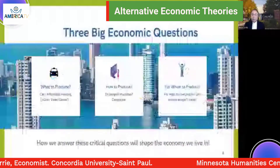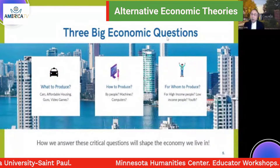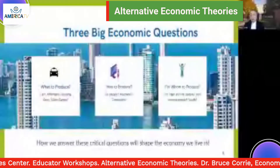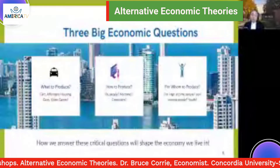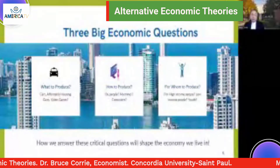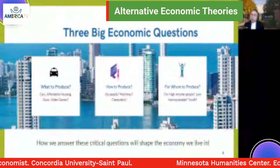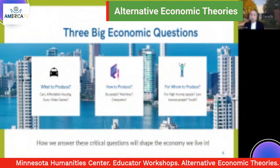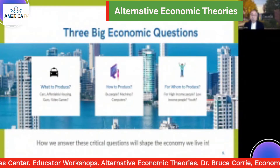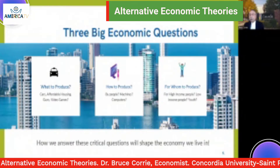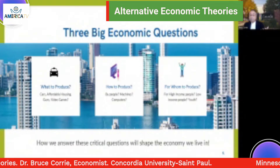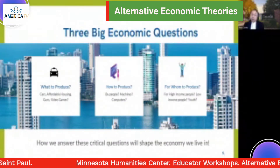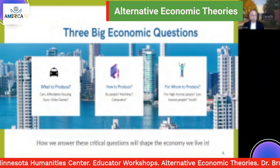So there are the three big questions in the world of economics. These three big questions are: what do we produce? Do we produce cars — what kind of cars? Luxury cars, ordinary cars, or electrical vehicles? How do we produce it — using people, or machines, or some combination of both? How do we produce these commodities, goods and services in the economy? And finally, for whom do we produce it — high-income people, low-income people? How do we decide about that? The way we answer these three critical questions will help shape the way the economy functions in our world today.